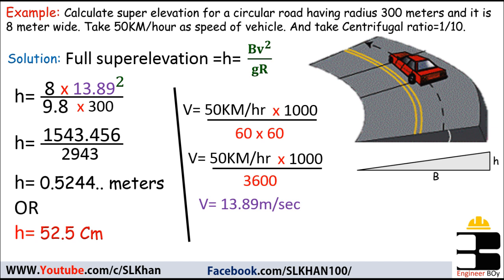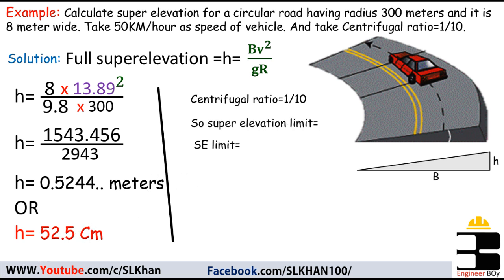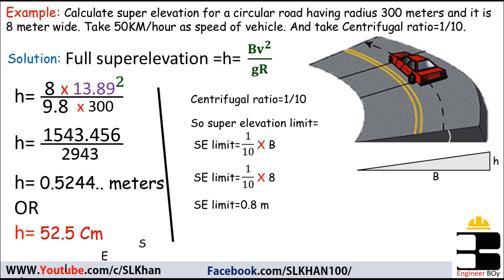We are not done yet because we need to check this calculated value against the limit of super elevation. The centrifugal ratio is 1/10, so the super elevation limit equals (1/10) × road breadth = (1/10) × 8 = 0.8 meters or 80 centimeters. Our calculated value of 52.5 cm is within the limit, so it is acceptable.